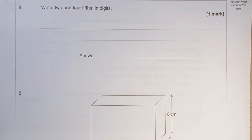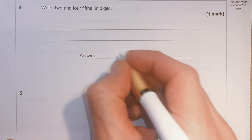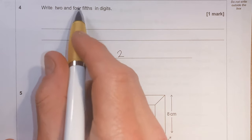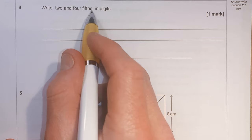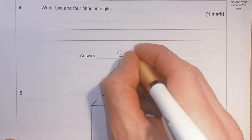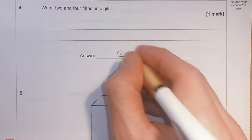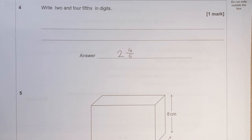Question 4: Write 2 and 4 fifths in digits. That just means using numbers. So 2 is the whole number, and 4 fifths means as a fraction. So the answer is 2 and 4/5.